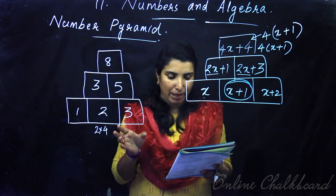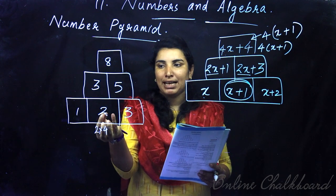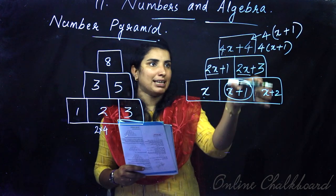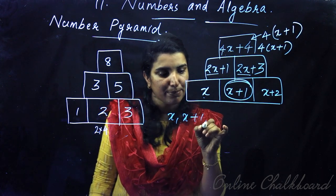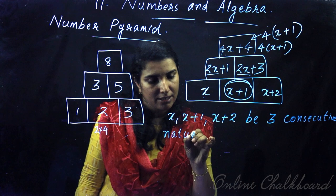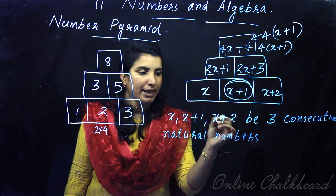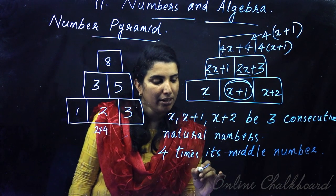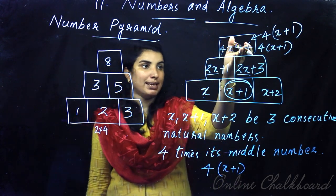Hence, we have proved this algebraic formula. If you have some algebraic formula explaining how to fix this, this is x plus 1, x plus 2 — be 3 consecutive natural numbers. This is 4 times the middle number, middle number 4 times, 4 into x plus 1, that is the same as the final answer.